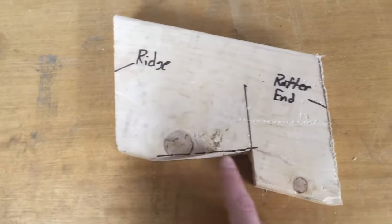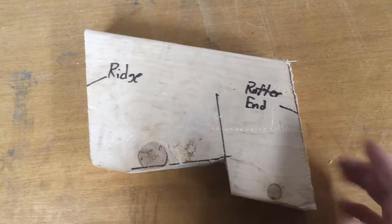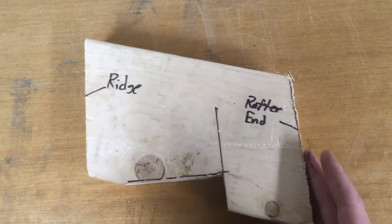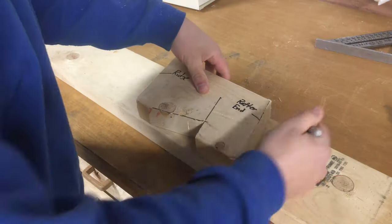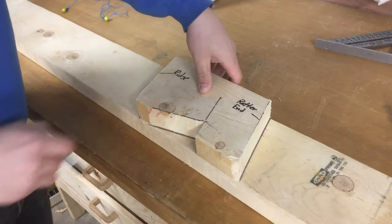Note that the ridge cut, the heel of the bird's mouth cut, and the rafter end are all parallel to each other, so you can use the same method to get the angle for those lines too. And once you have one rafter done, you can trace around it on new boards to make new rafters.